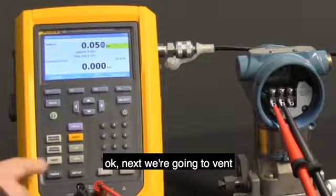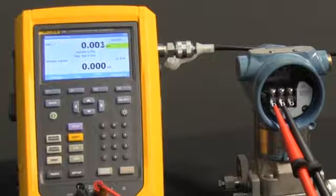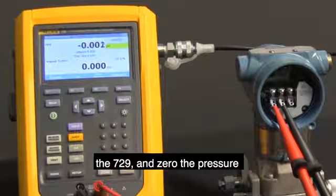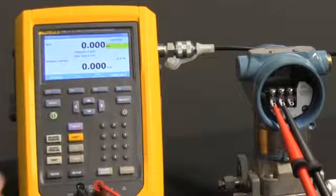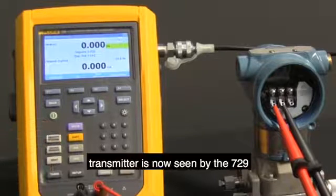Next we're going to vent the 729 and zero the pressure.